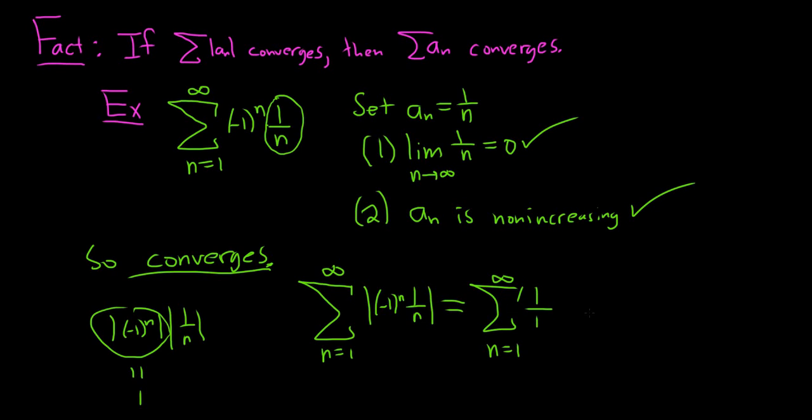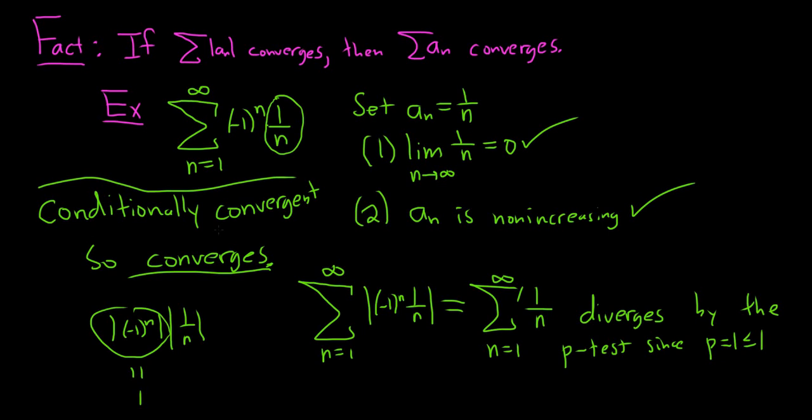So we're left with 1 over n. And this diverges by the p test, since p is 1, which is less than or equal to 1. So it diverges in absolute value and converges in the regular sense. So this is an example of a conditionally convergent series. That would be the answer in this case.